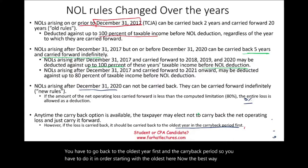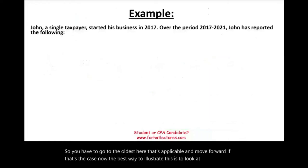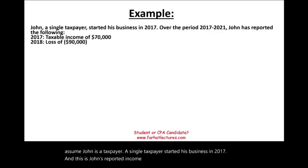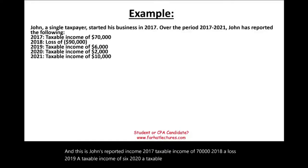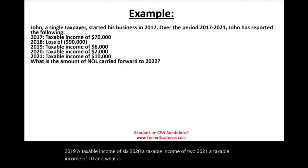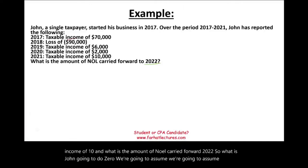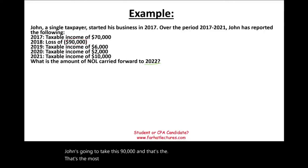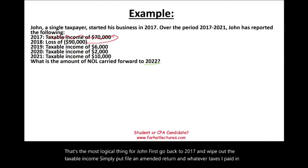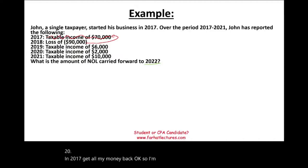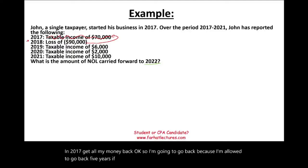The best way to illustrate this is with an example. Let's assume John is a single taxpayer who started his business in 2017. John reported: 2017 taxable income of $70,000; 2018 a loss of $90,000; 2019 taxable income of $6,000; 2020 taxable income of $2,000; 2021 taxable income of $10,000. We want to know the amount of NOL carried forward to 2022. John generated a 2018 NOL of $90,000, and the most logical thing is to carry it back to 2017 first, filing an amended return to get taxes paid back. Of the $90,000, we use $70,000 to wipe out 2017.